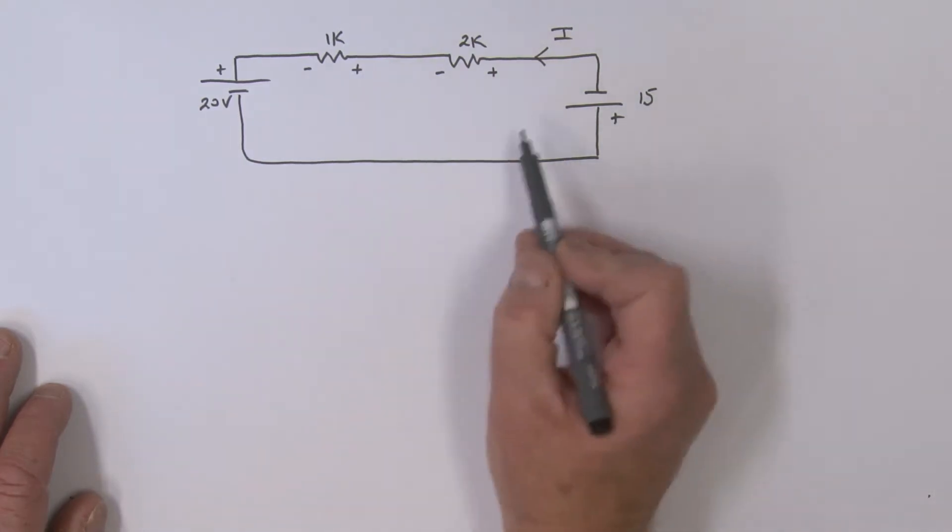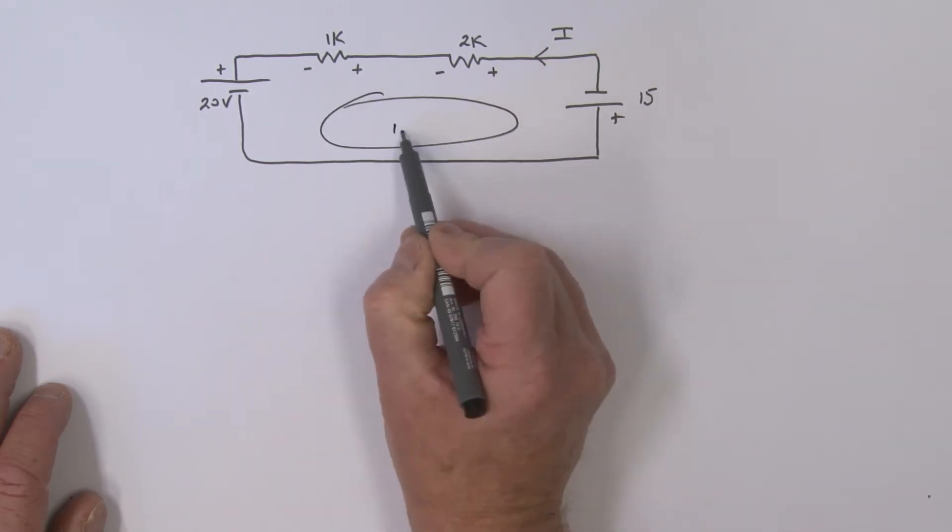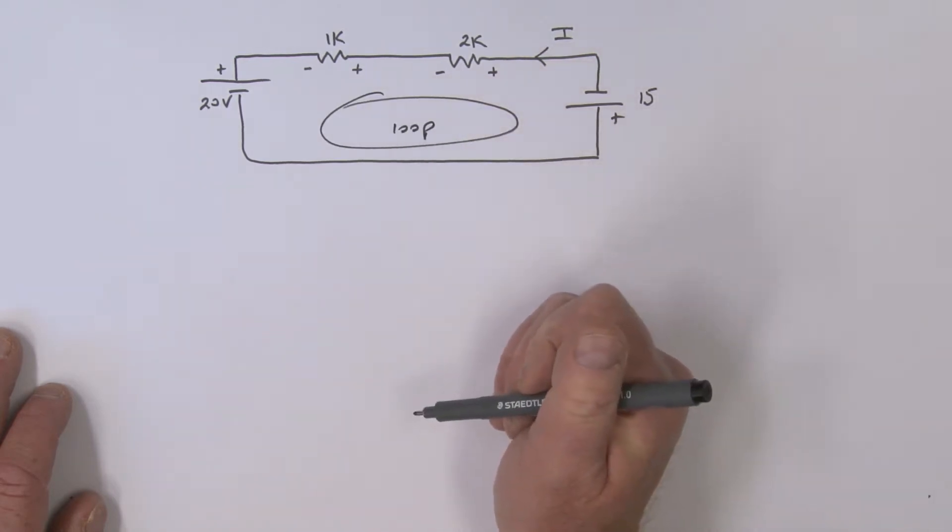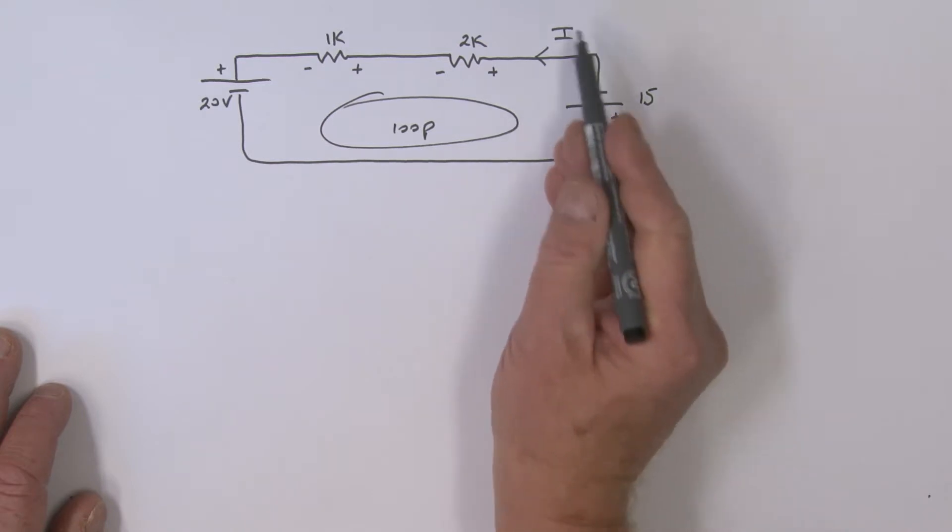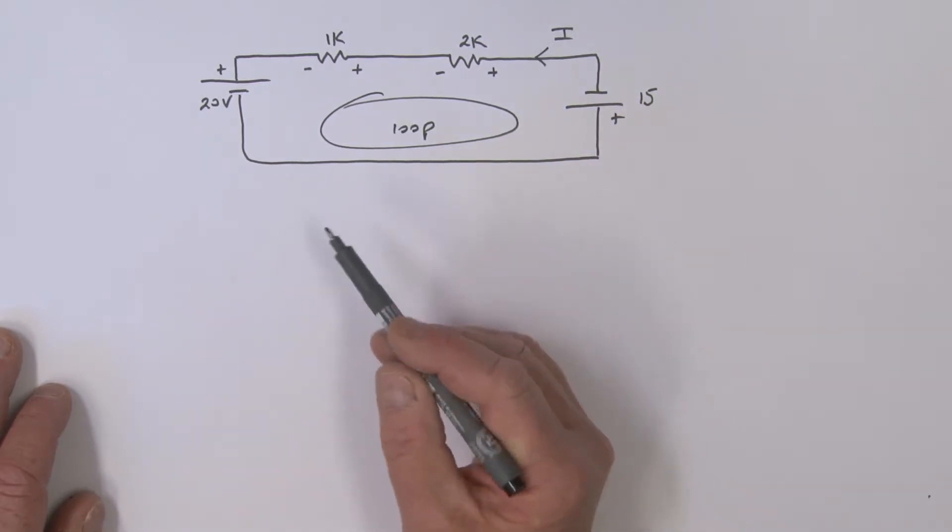So what we're going to do is take a loop. There's our loop, and we're going to simply sum the voltages around the loop in order to find that current I. But I'm going to use a slightly different convention here as we sum these voltages around that loop.